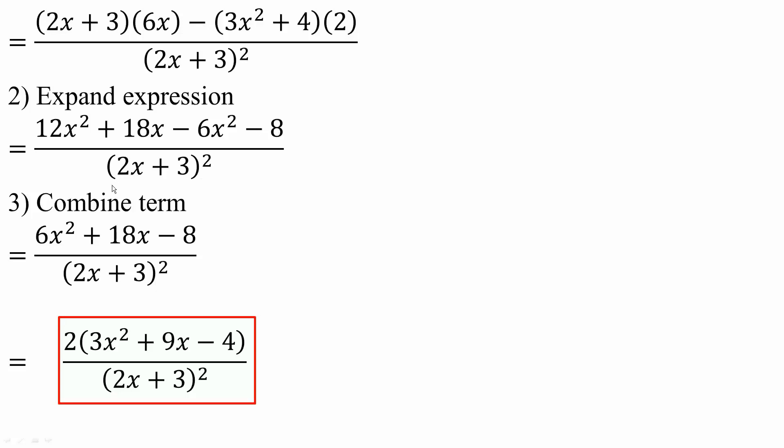So next, we will combine like terms. 12x squared minus 6x squared is 6x squared plus 18x minus 8.